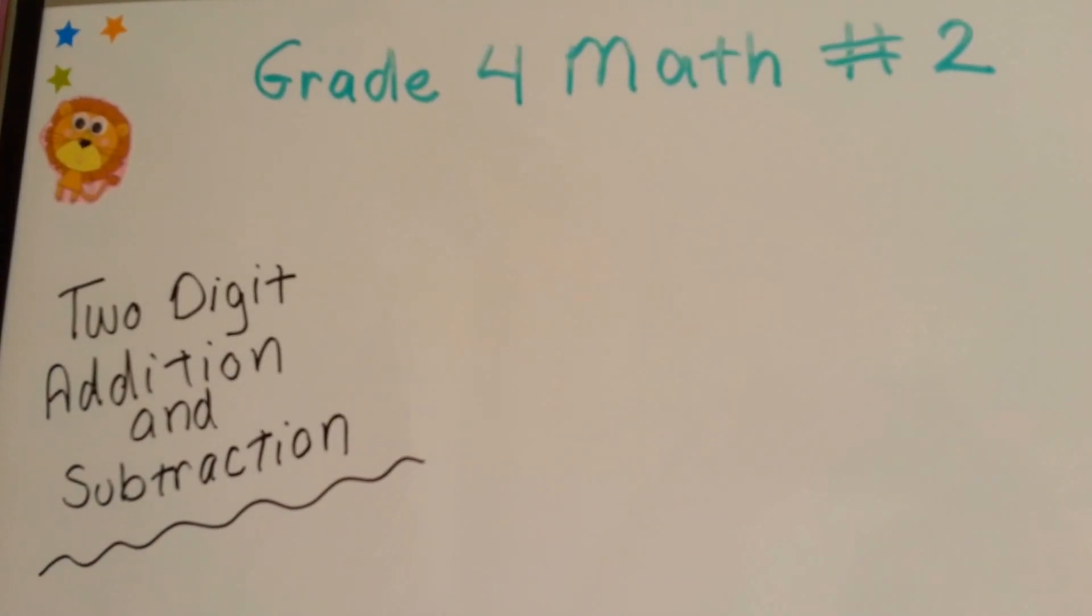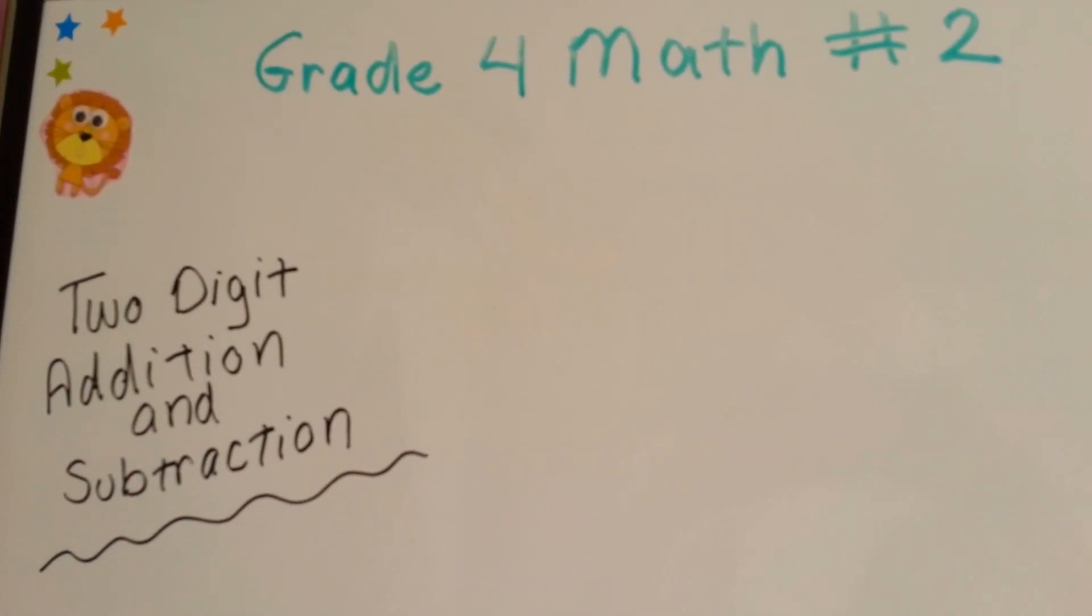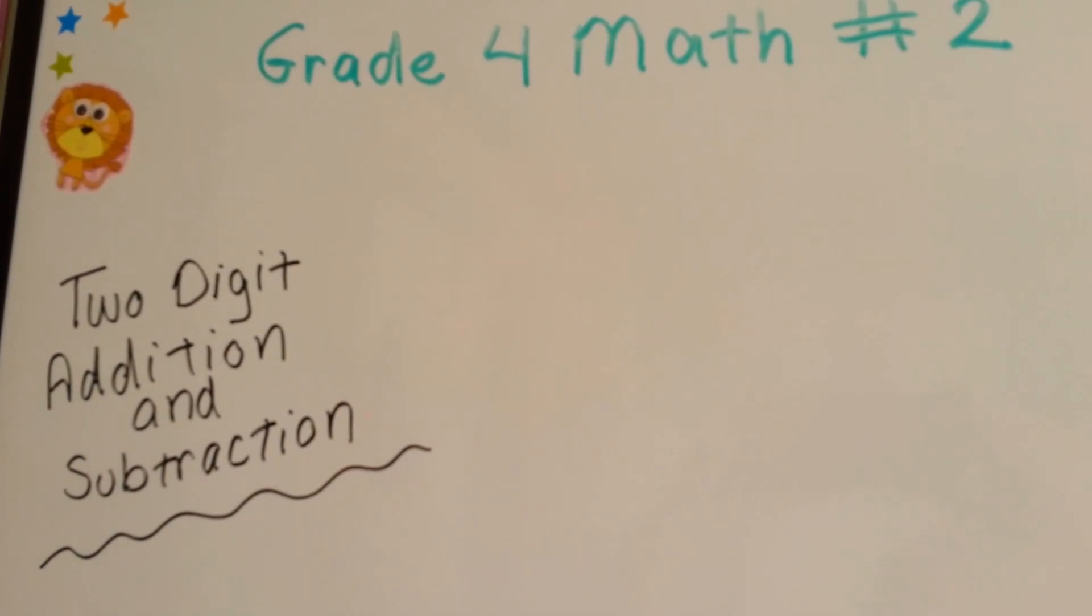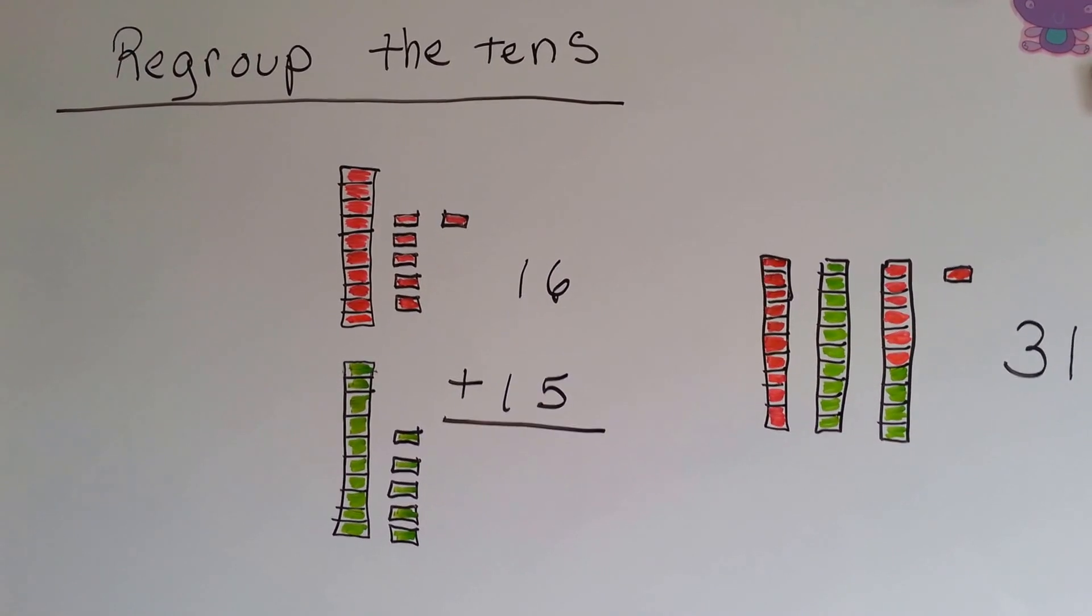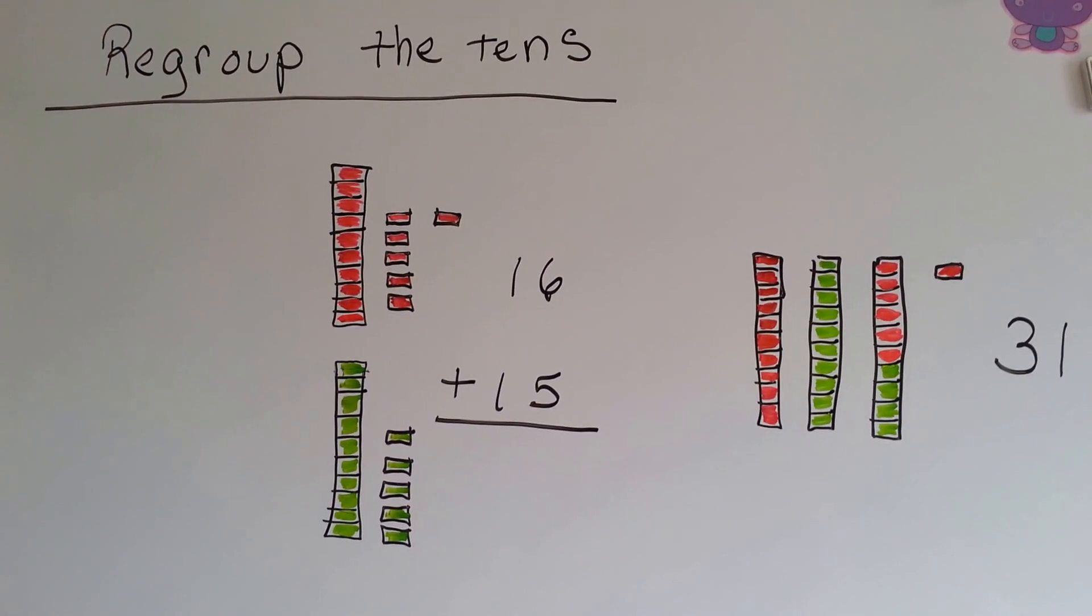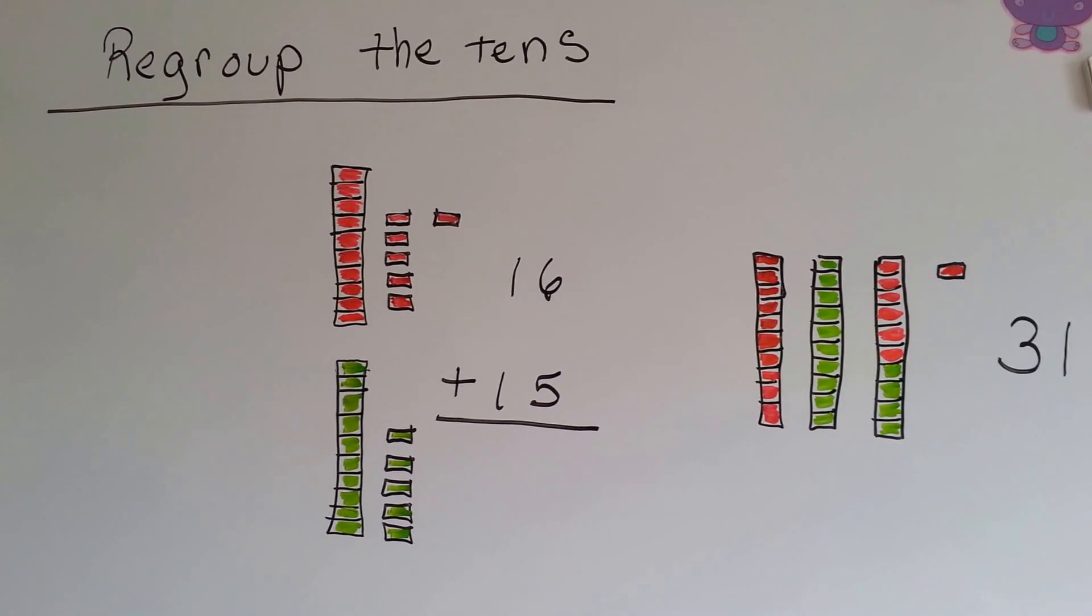Grade 4 math number 2, 2-digit addition and subtraction. Because we're starting the 4th grade series, we're going to do a little review of things that we learned in the 3rd grade series.